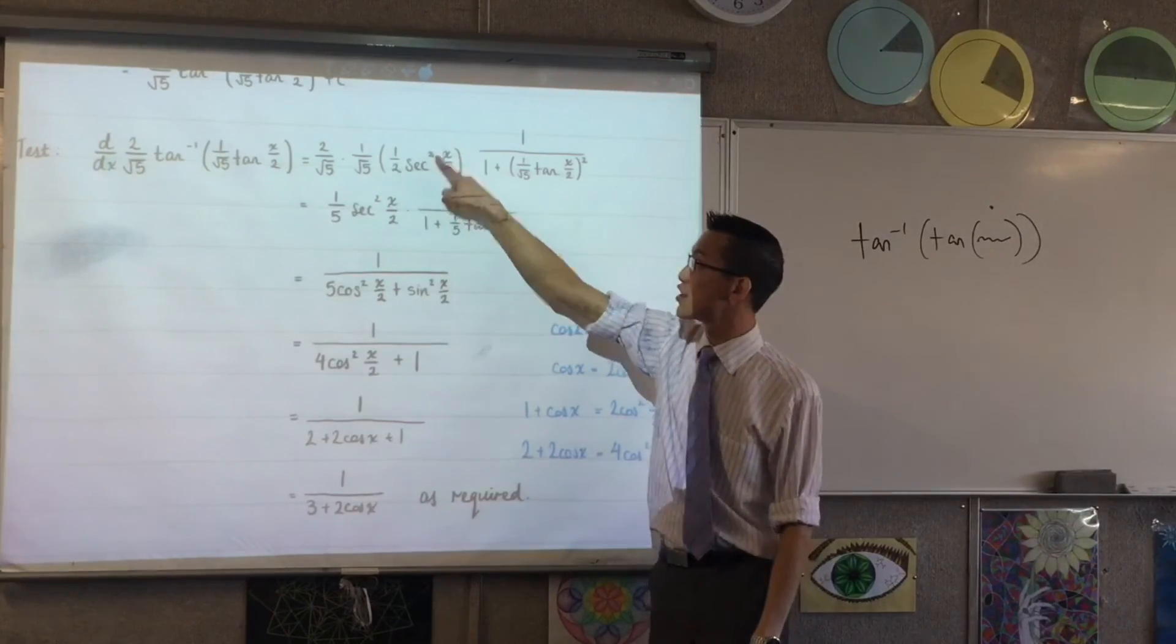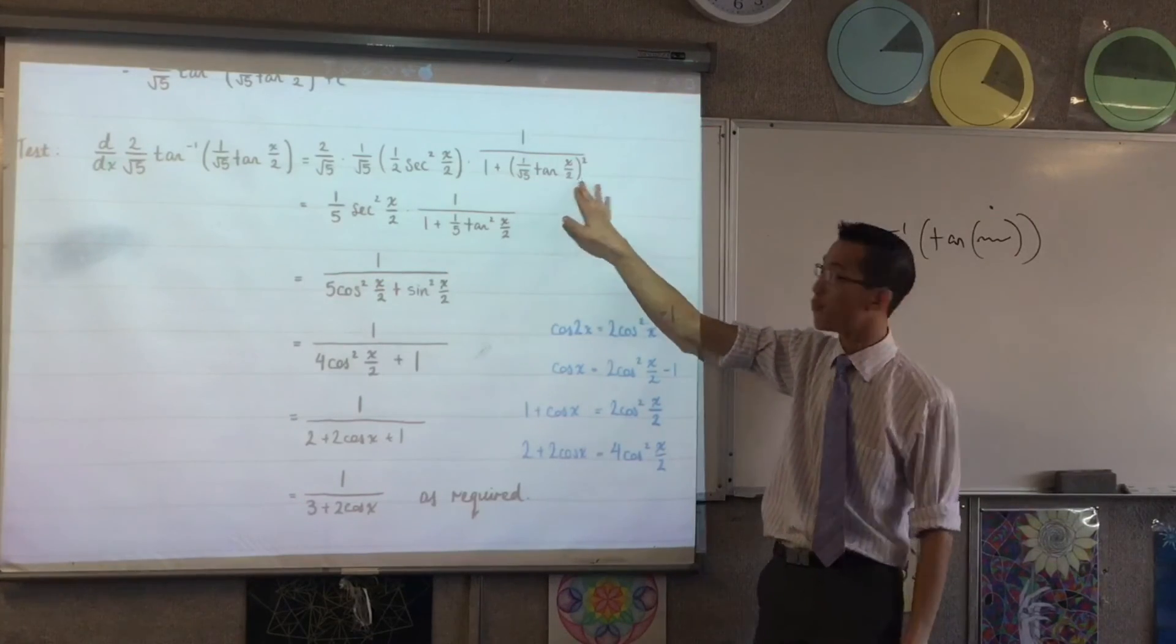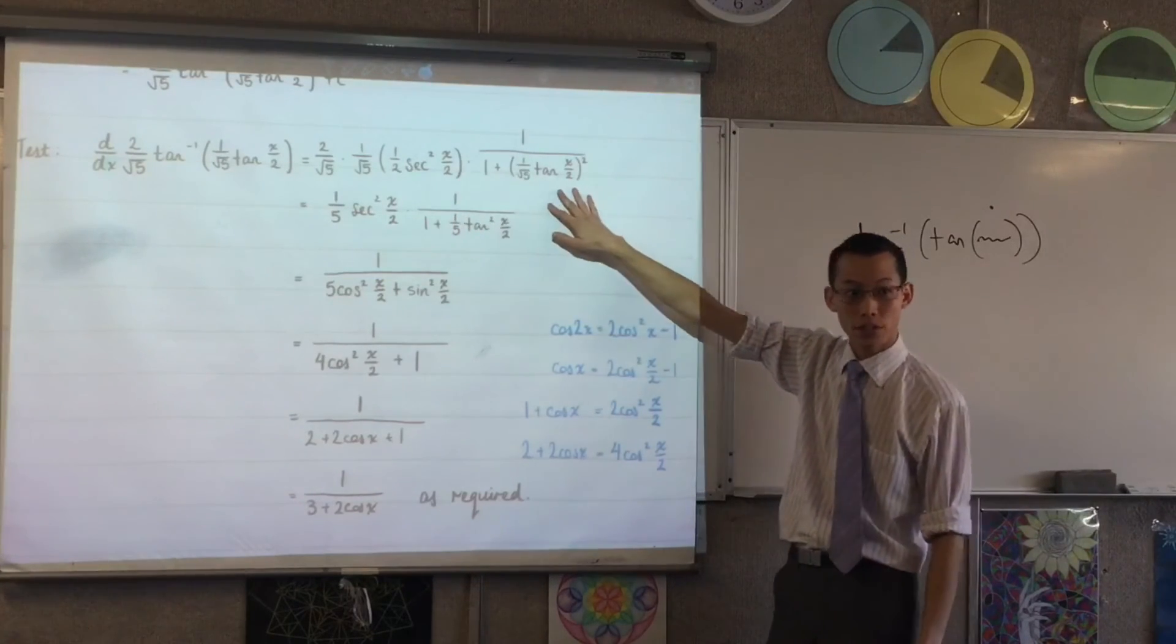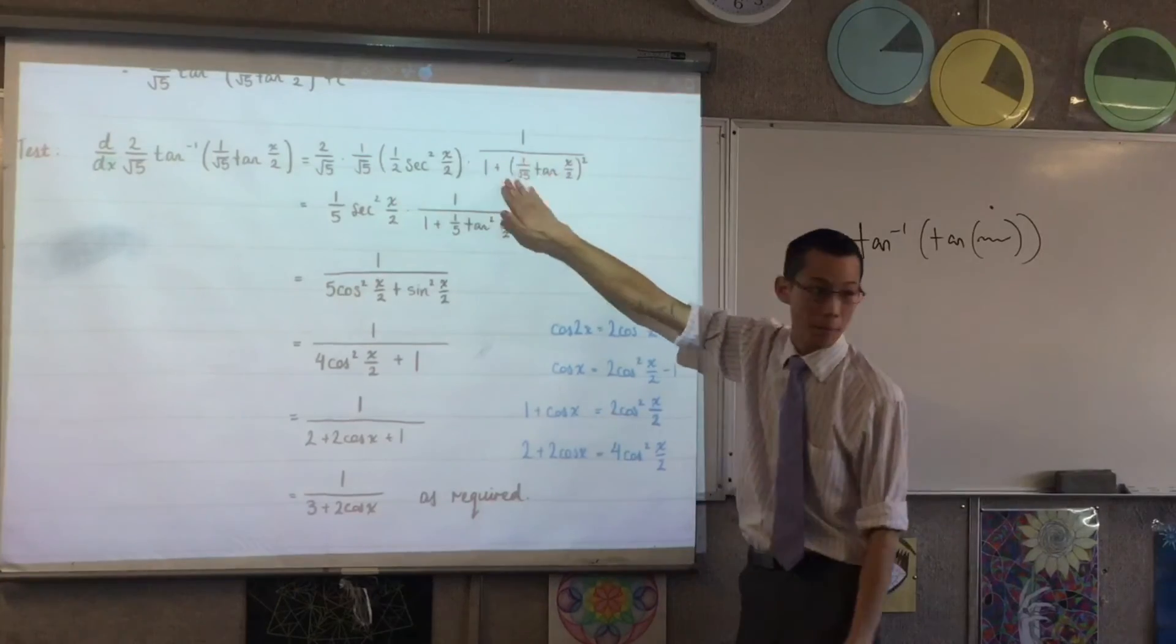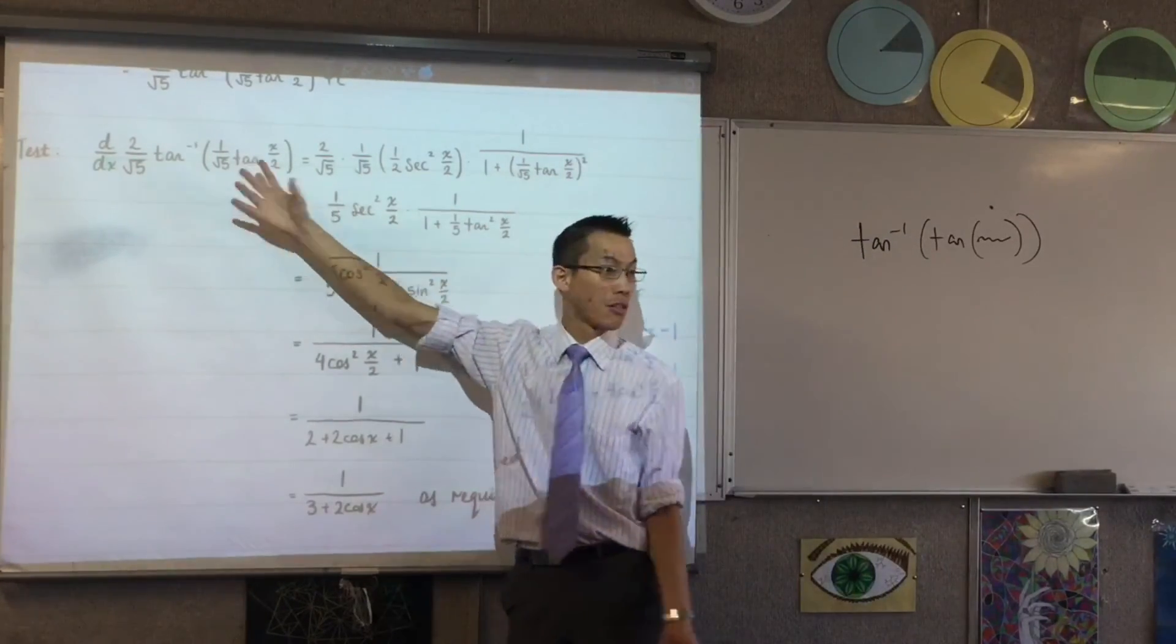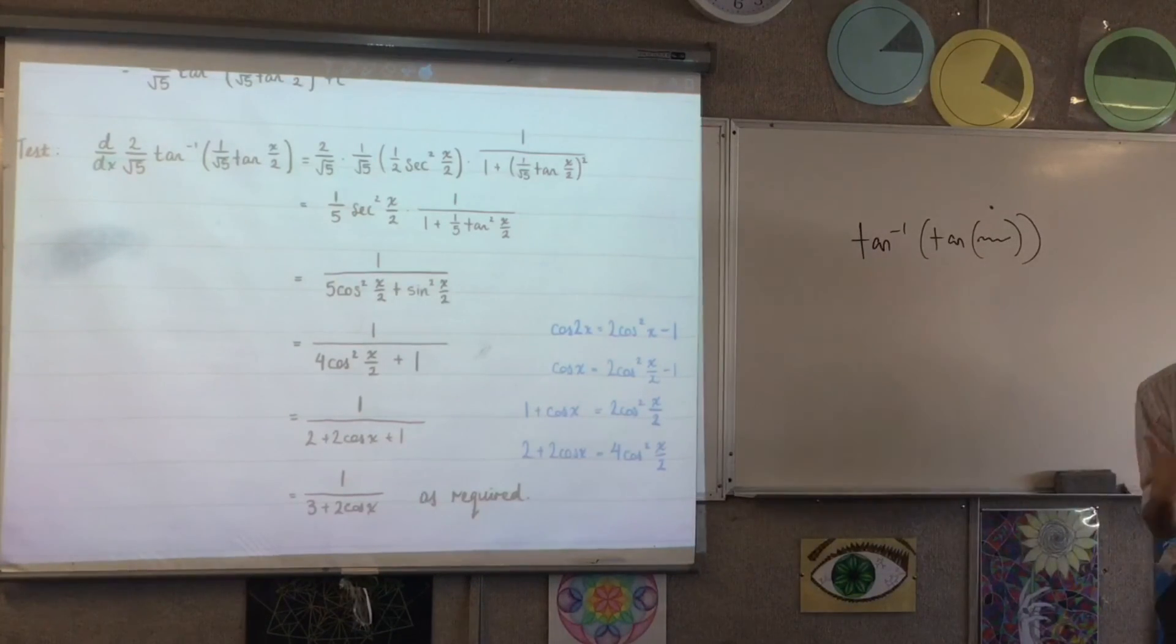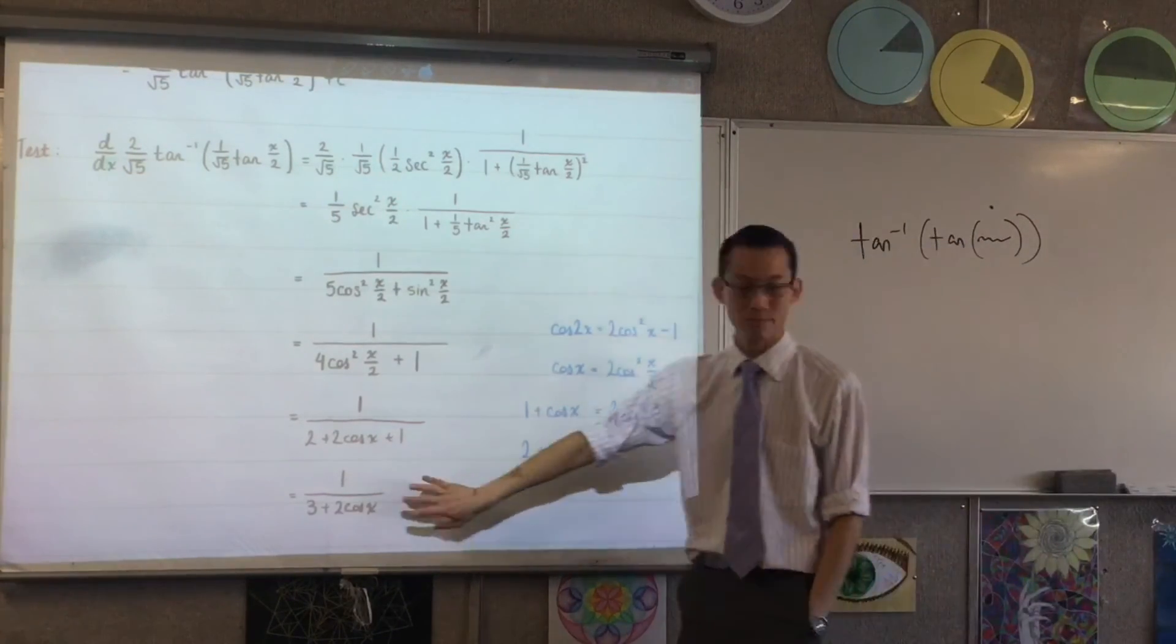Tan turns into sec squared, but there's chain rule here, so the half comes out the front. And then what's this? This is the derivative of tan inverse, which is 1 on 1 plus whatever squared, and the whatever I have happens to be that whole thing. So I think it's kind of nice to be able to see how something that looks so disastrous comes back to something beautiful and simple.